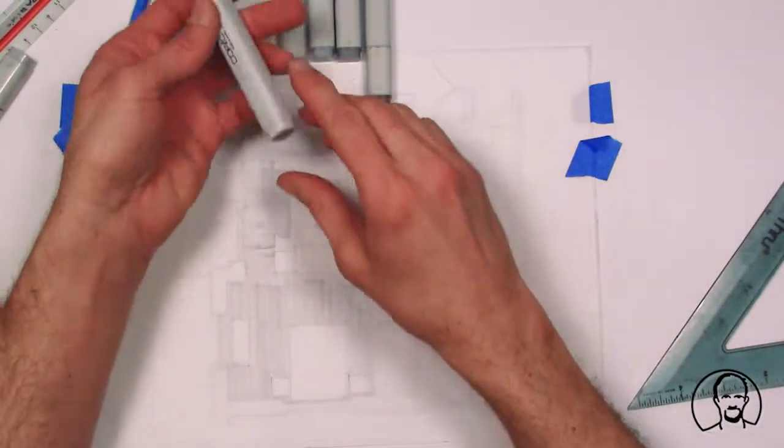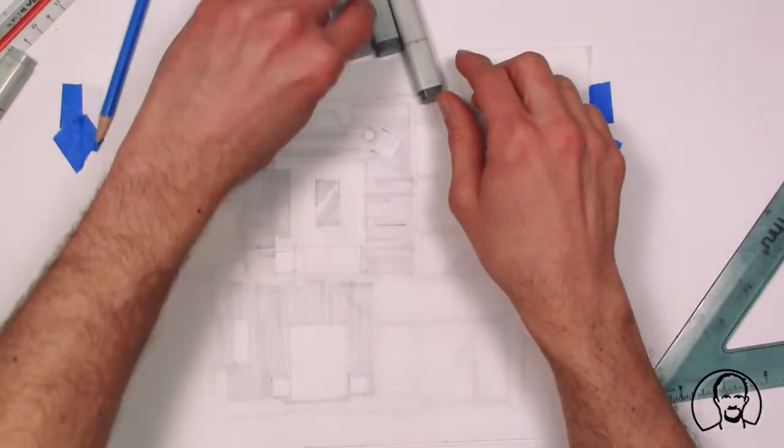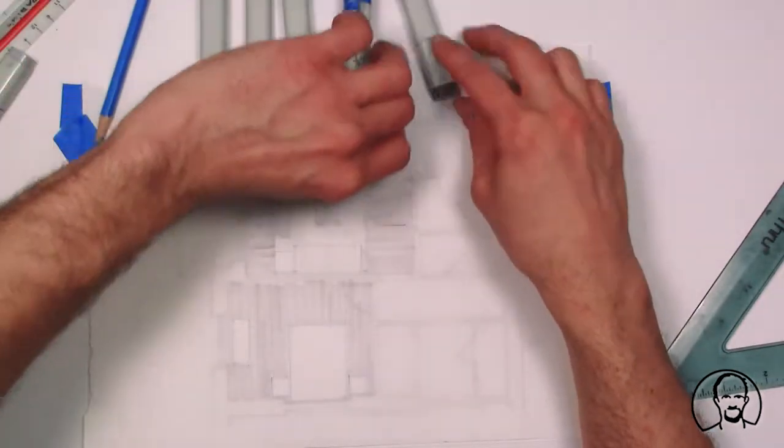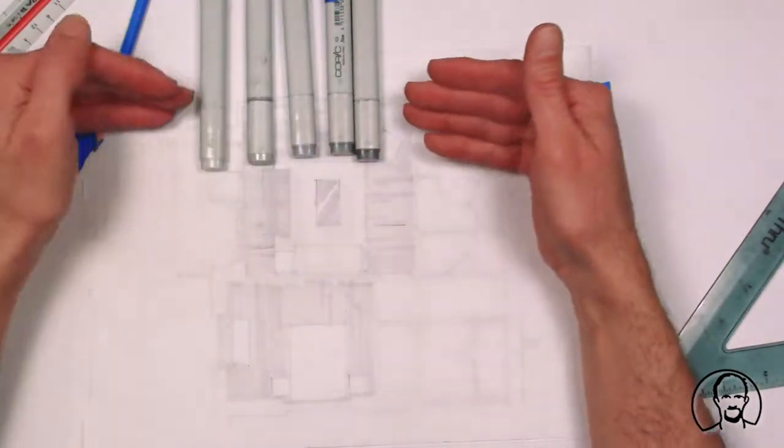So I have cool gray two, cool gray three, cool gray four, five and six lined up like this.